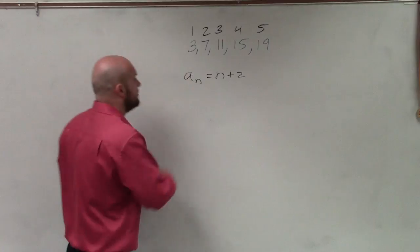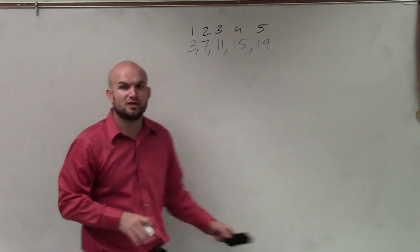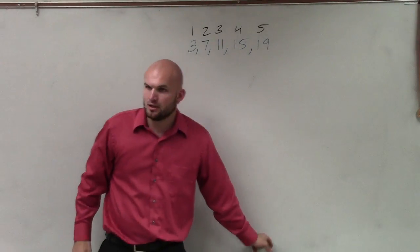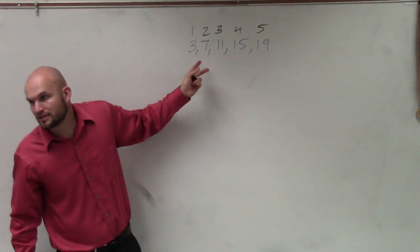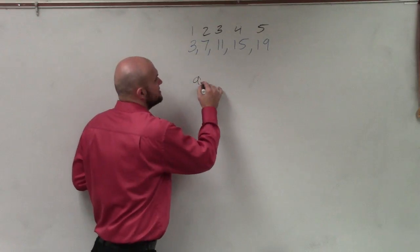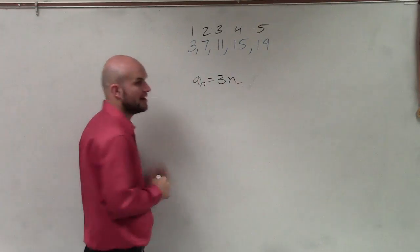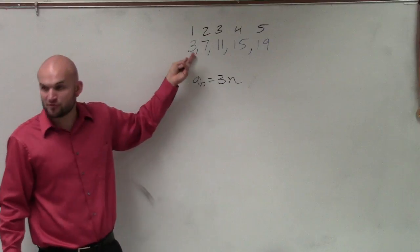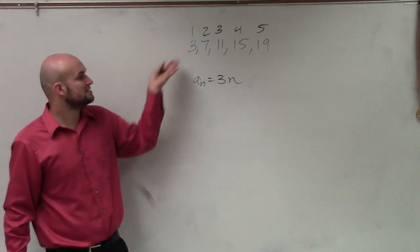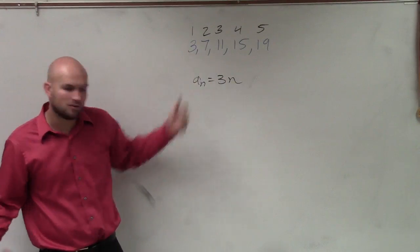So now I go ahead and look for multiplication and division. What do I need to multiply to get to my first? I could say a sub n equals 3n, because if I plug in 1, that gives me that first value. Does that work for the second one? No.